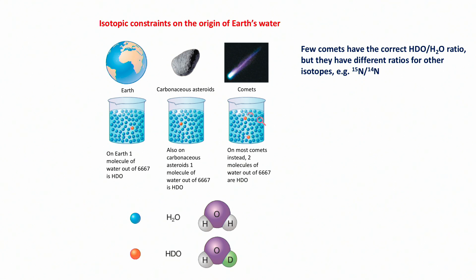As a matter of fact, there are some comets which also have the correct HDO-H2O ratio, but these comets have different ratios for other isotopes, for instance, for nitrogen isotopes. In addition, numerical simulations show that only one comet out of 10 million hits the Earth. So their contribution to the delivery of water of any kind of material is quite negligible. All together, these data clearly show that water comes from carbonaceous asteroids.